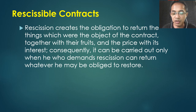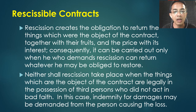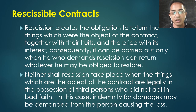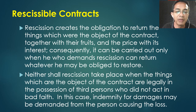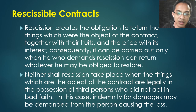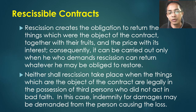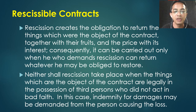Rescission is only possible if the parties can still return the things. If the thing was lost or destroyed, then indemnity for damages can be demanded from the person causing the loss. So rescission is possible only if there can be mutual restitution. If not possible, then damages based on the value of the thing can be demanded from the person causing the loss.